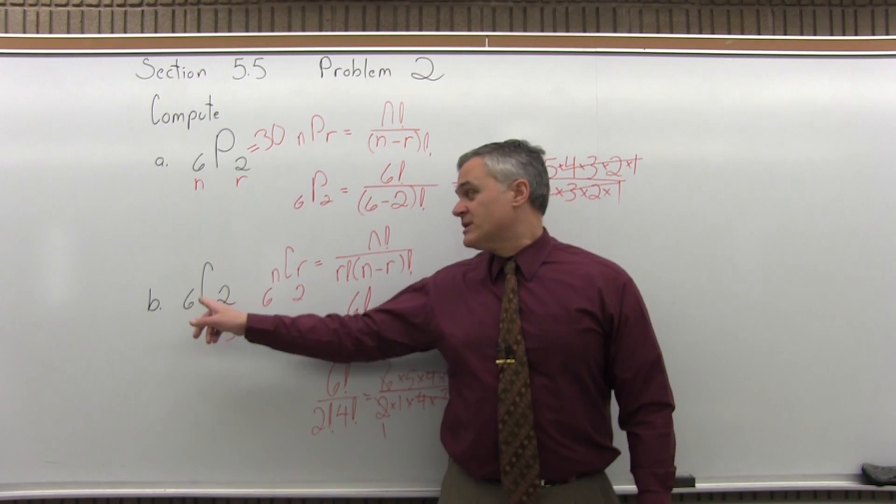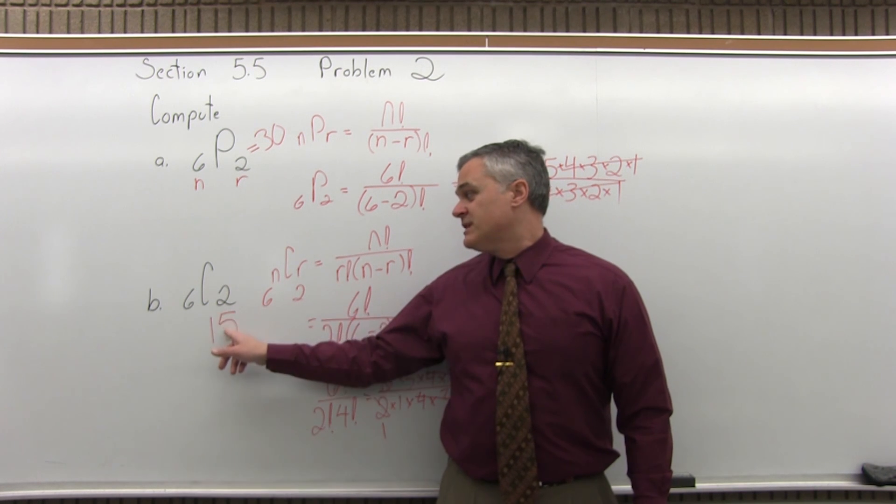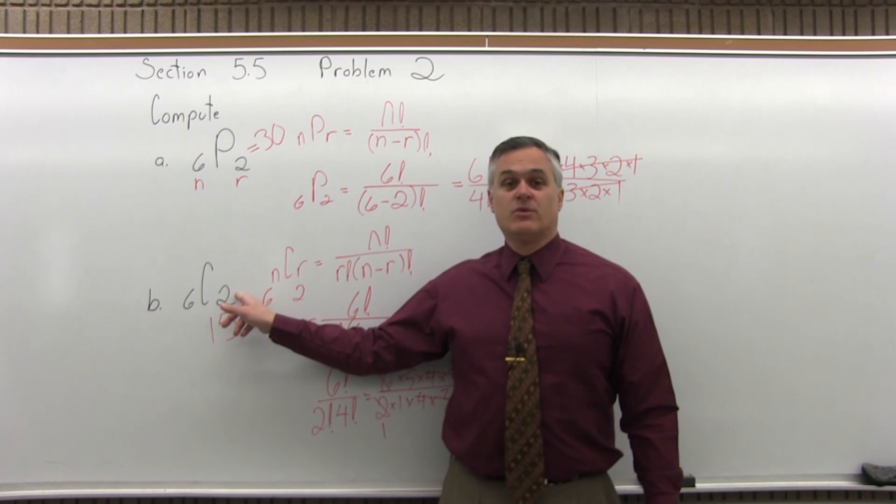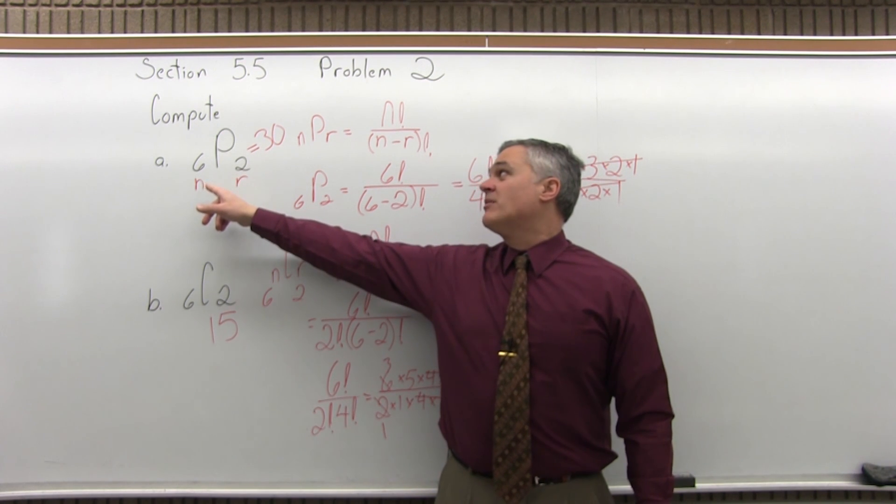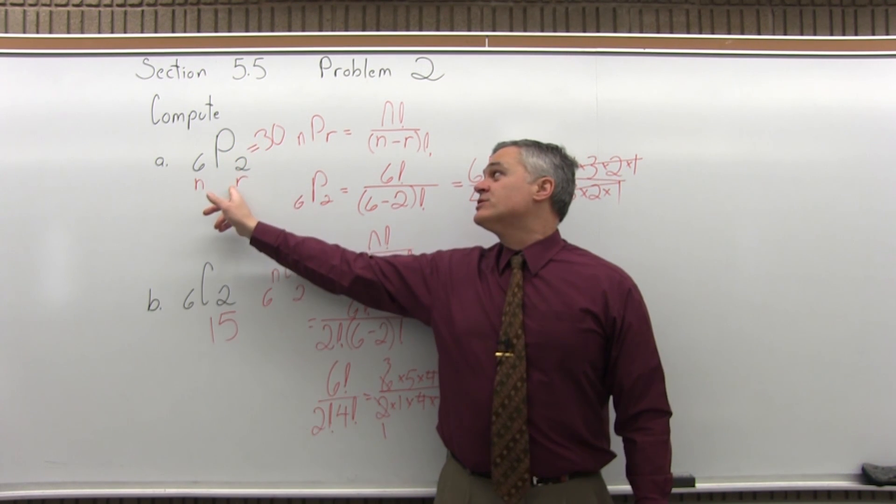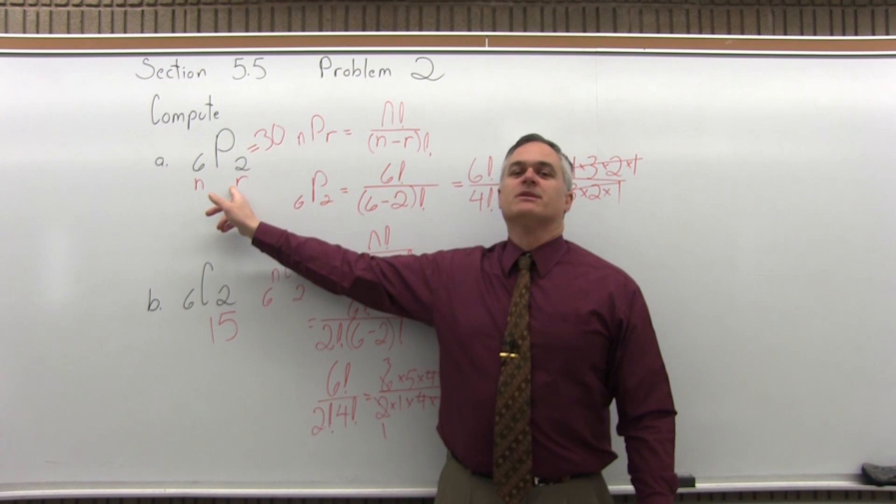And again, what does that mean? If there are 6 items to choose from, there's 15 different ways you can choose 2 with no repeats if the order doesn't matter. If you have 6 items to choose from, there are 30 ways you can choose 2 if there are no repeats and the order does matter.